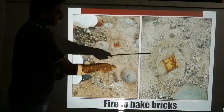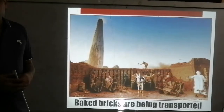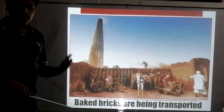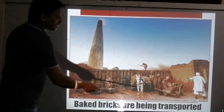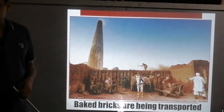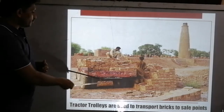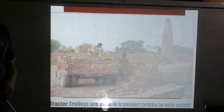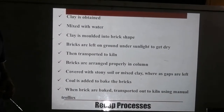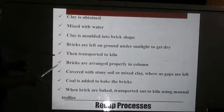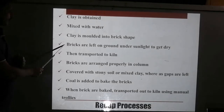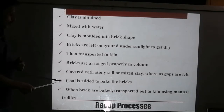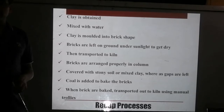A fire master adds coal into the gaps to bake or burn the bricks. You can see the fire in these gaps after adding the coal. When the bricks are baked, they are taken out using hand trolleys or donkey carts. To recap: clay is obtained and mixed with water, molded into bricks, left to dry under sunlight, transported to the kiln, arranged in columns, covered with stony soil, coal is added to bake the bricks, and then transported out using manual trolleys.